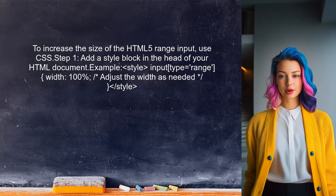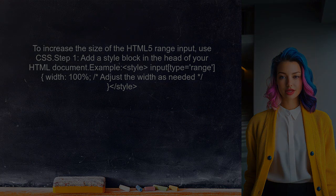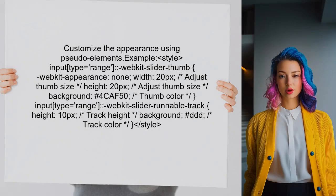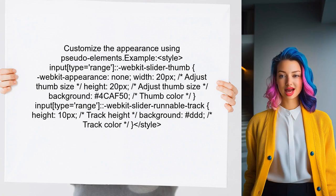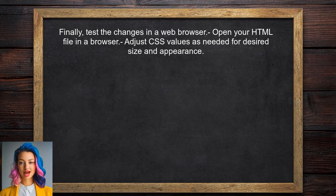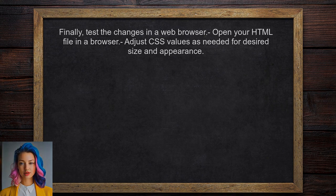To increase the size of the HTML5 range input, you can use CSS to adjust its width. First, create a style block in the head of your HTML document. Next, apply this style to the range input element — this can be done by adding a class or directly targeting the input type. Additionally, you can customize the appearance further by using pseudo-elements, which allows for more control over the track and thumb styles. Finally, test your changes in a web browser to see the updated size and appearance, and adjust the CSS values as needed for your design.